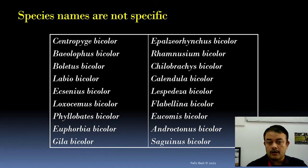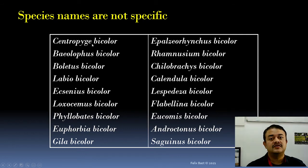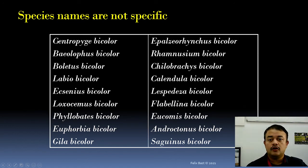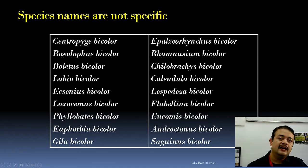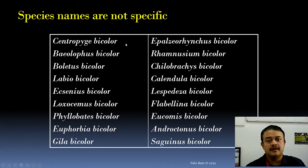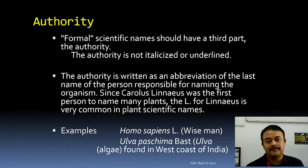An important point: specific names are not specific. For example, many completely unrelated organisms across plants, animals, fungi, and bacteria share the species epithet 'bicolor' — meaning the organism appears in two color forms. This shared species name implies no shared ancestry. Genus names are generally more specific and meaningful for indicating relationships, but the species epithet alone tells you nothing about relatedness.